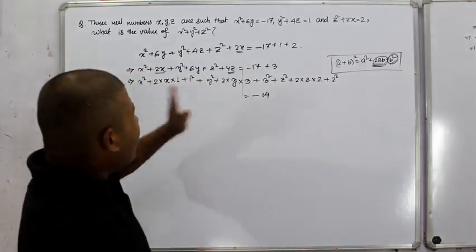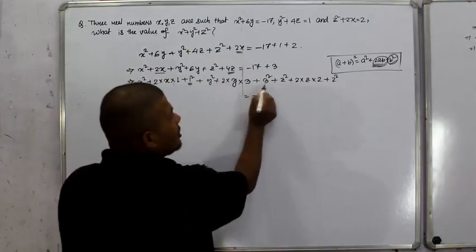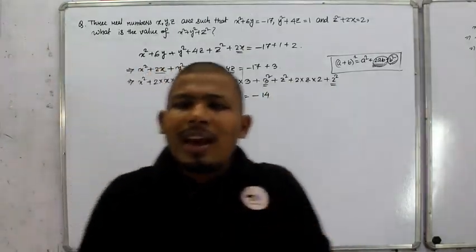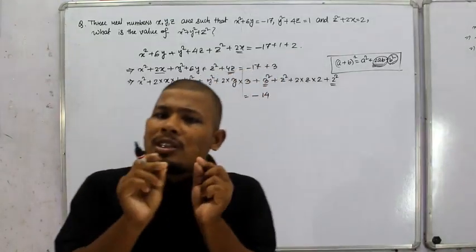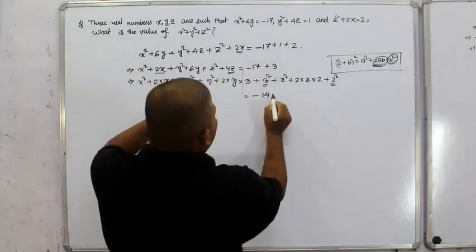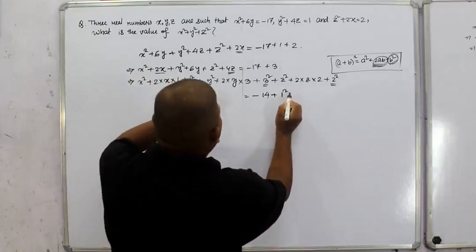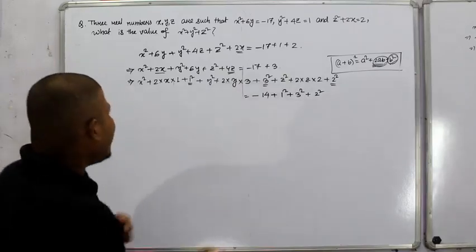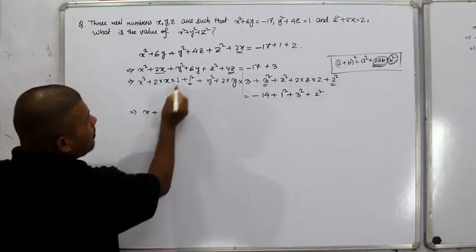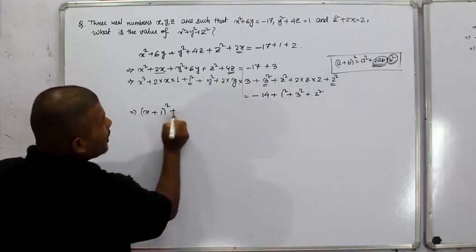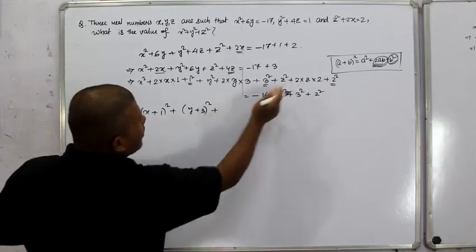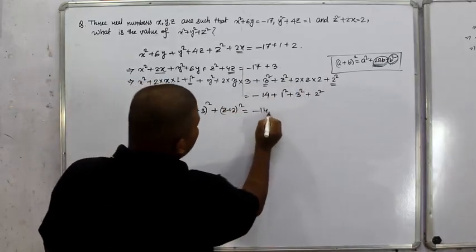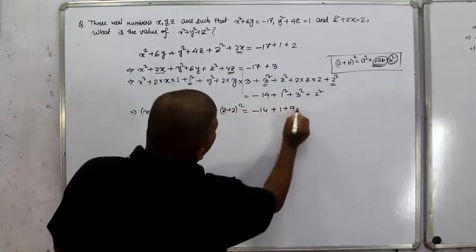If the left side equals x plus 1 whole square, plus y plus 3 whole square, plus z plus 2 whole square, the right side becomes minus 14 plus 1 plus 9 plus 4.